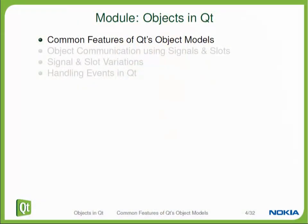In this video, we will show you how Qt extends the basic C++ object model with features that are needed for GUI development. These features include memory management, event handling, and dynamic properties. They are also the base for the signal and slot mechanism, which is very fundamental to Qt and will be covered later.